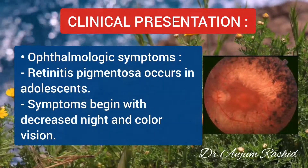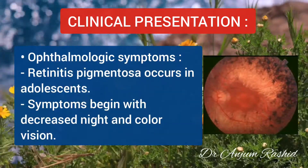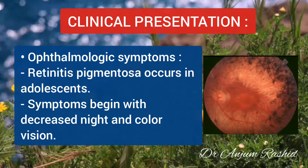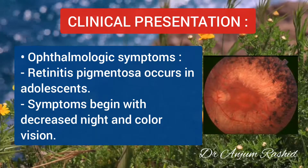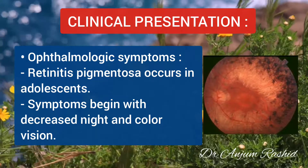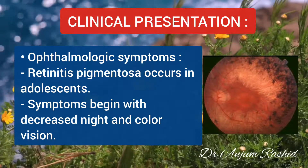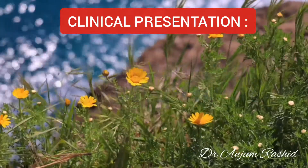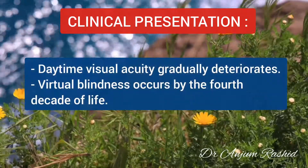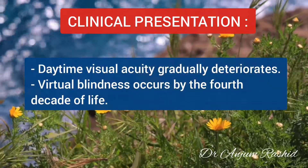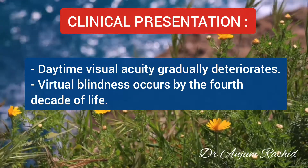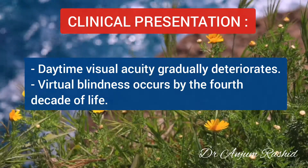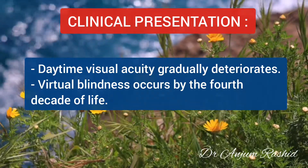In Abetalipoproteinemia, ophthalmic symptoms include retinitis pigmentosa, which occurs in adolescence. Symptoms begin with decreased night and color vision. Daytime visual acuity gradually deteriorates and virtual blindness occurs by the fourth decade of life.